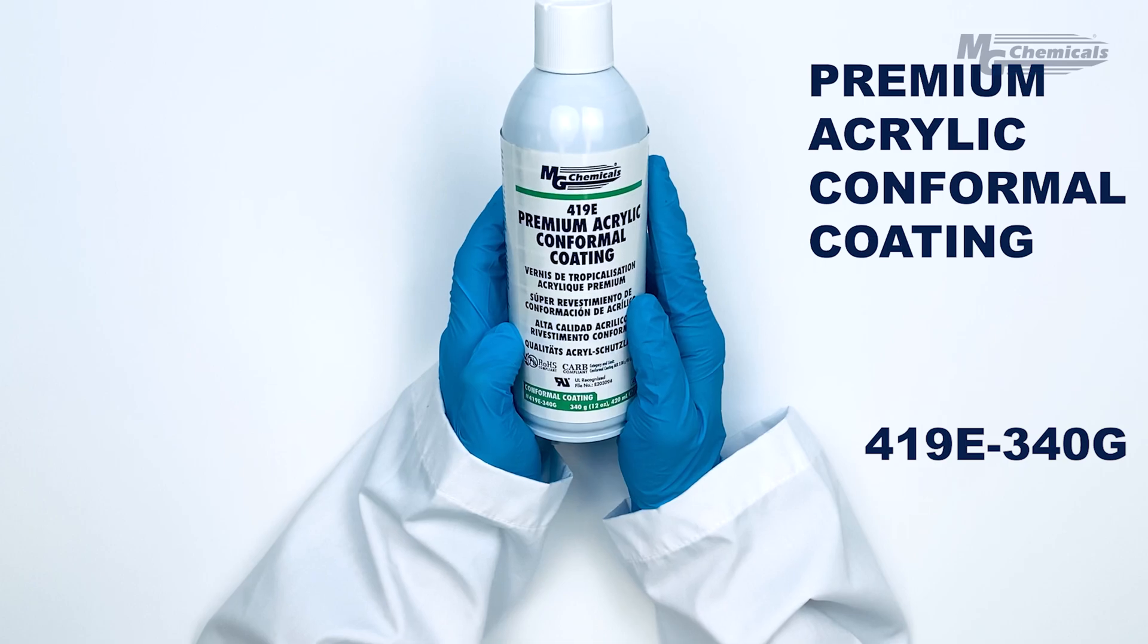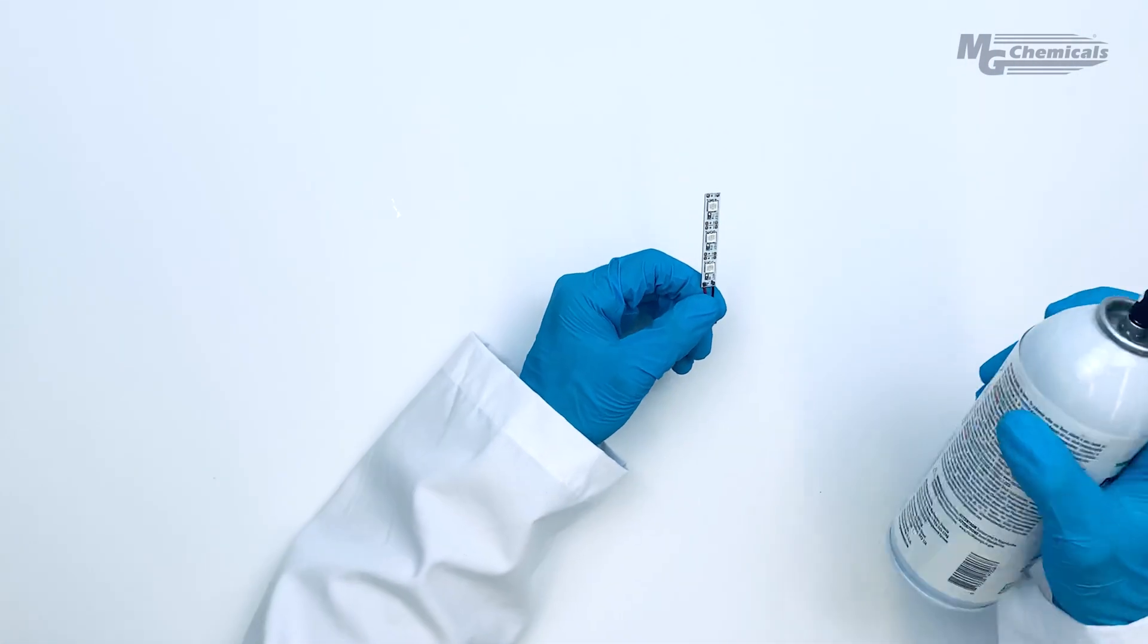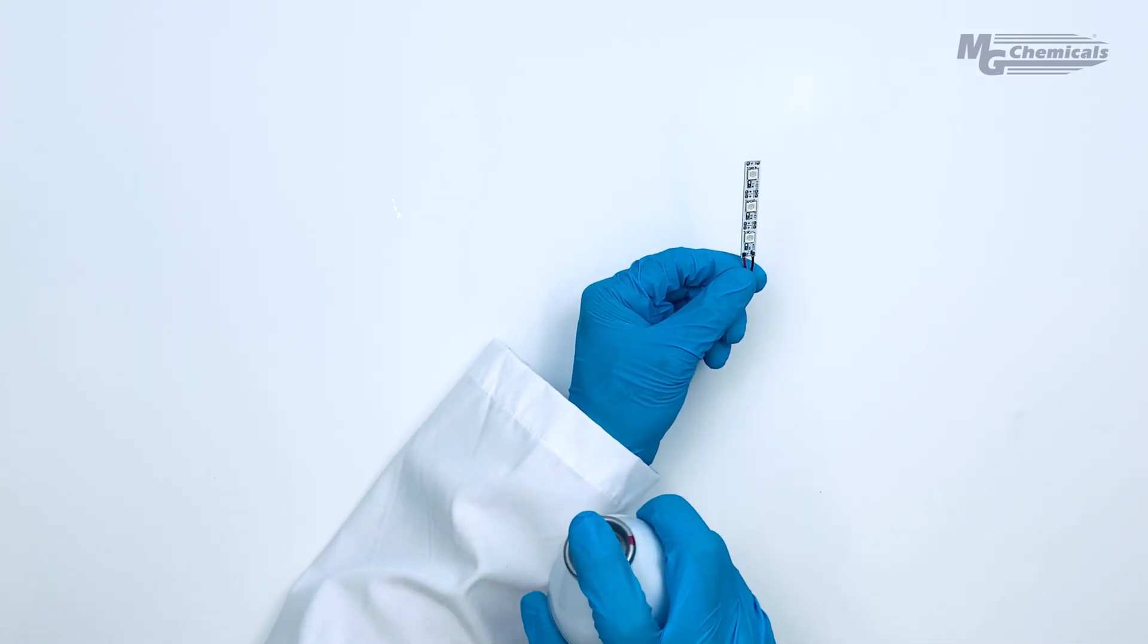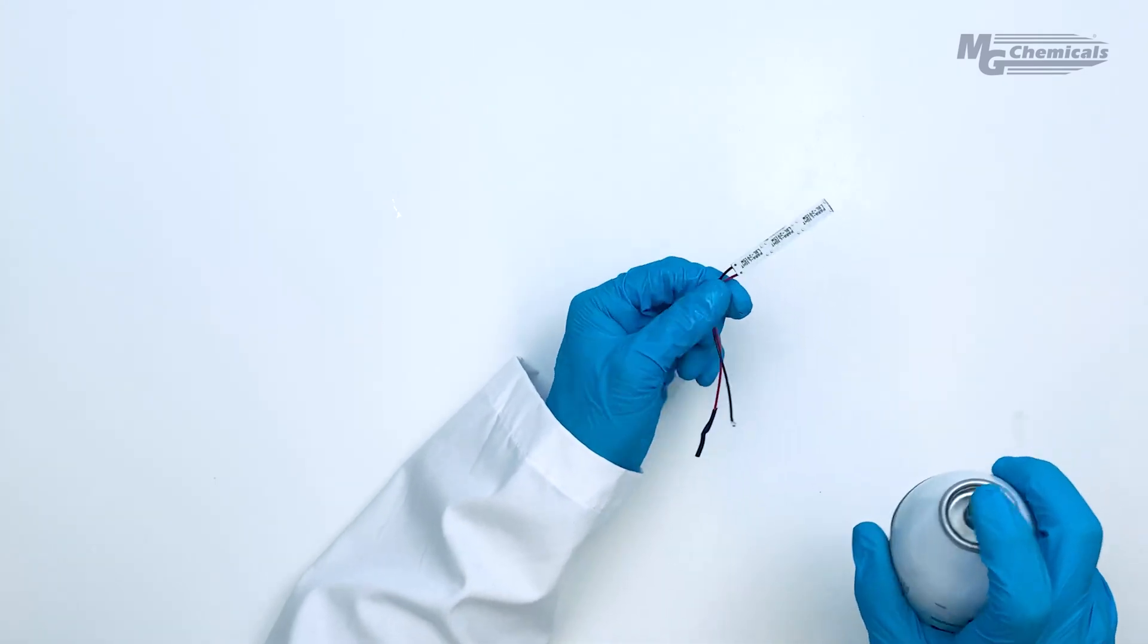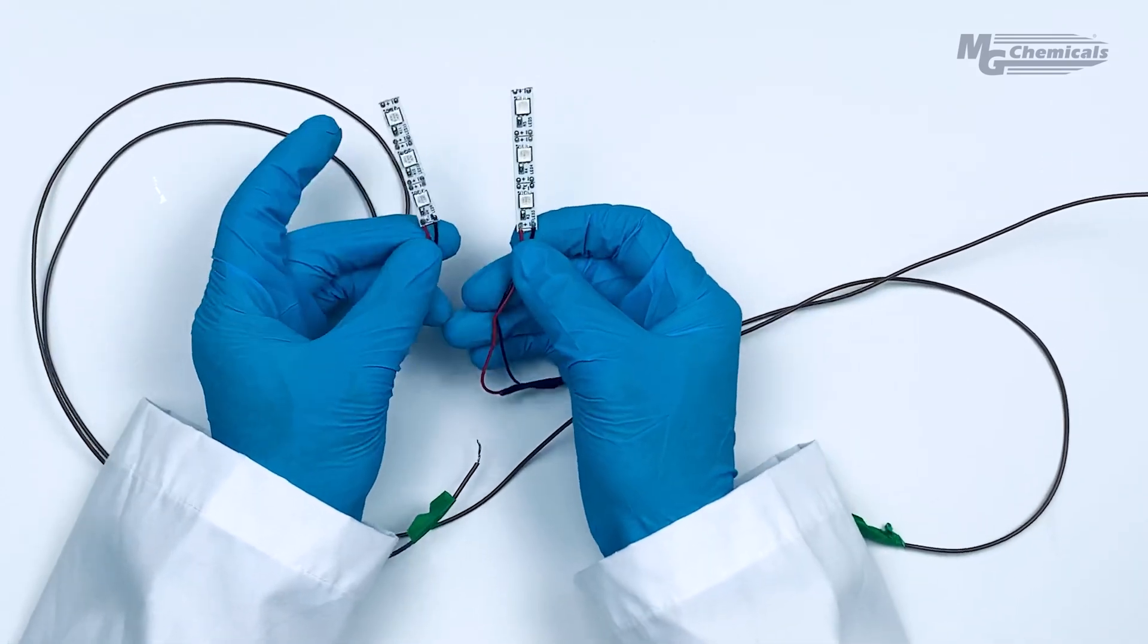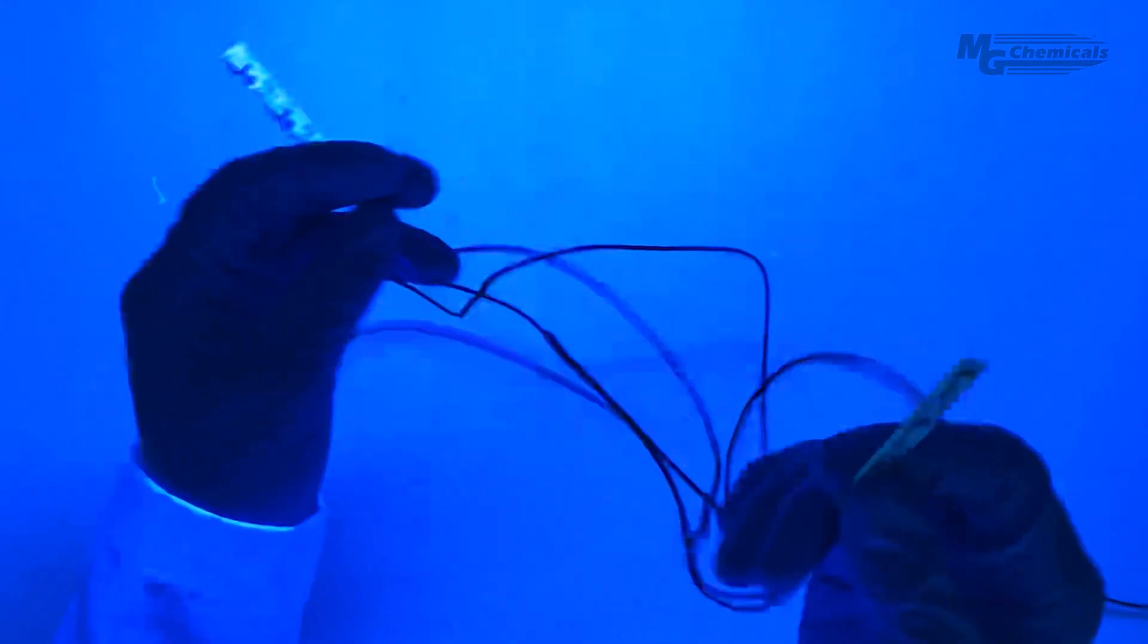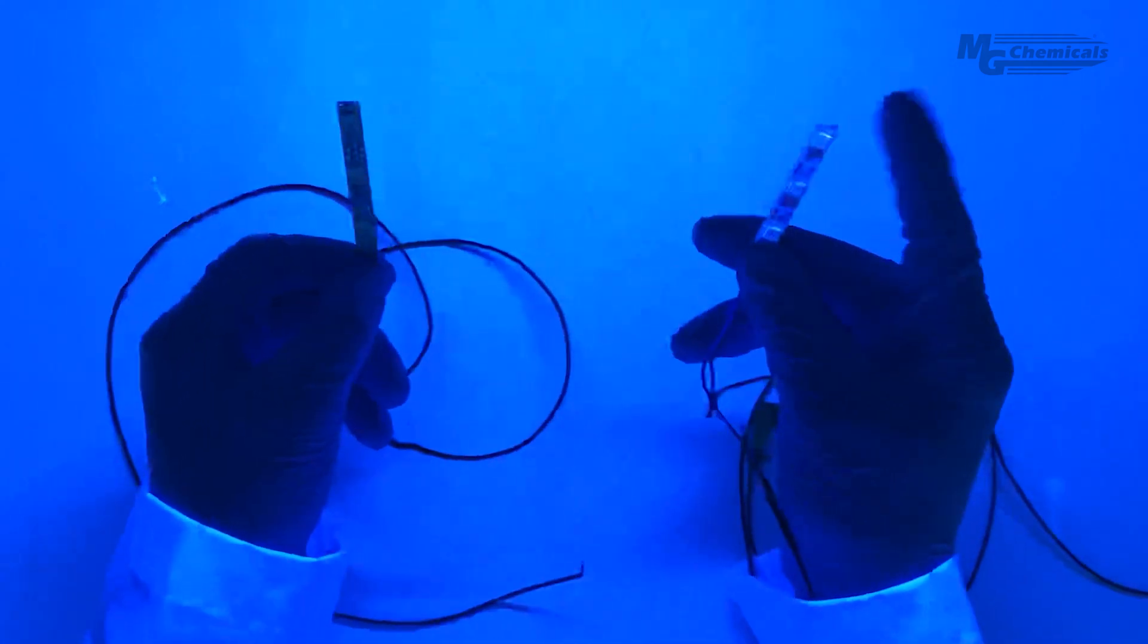I'll use MG's 419E premium acrylic conformal coating to coat this simple LED strip. I have also included an uncoated strip in our demonstration as a control which you can see here with the conformal coated part fluorescing under black light. Notice both sides have been coated ensuring full coverage throughout the strip.